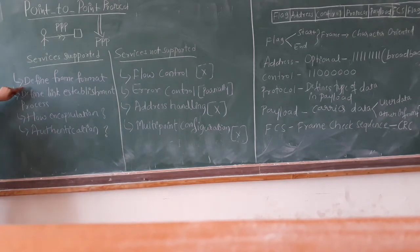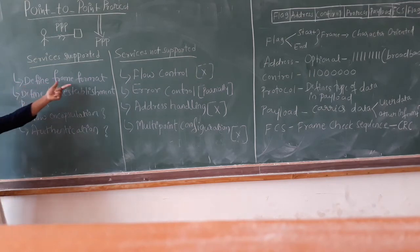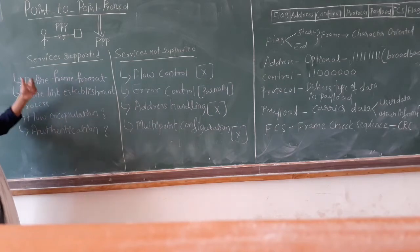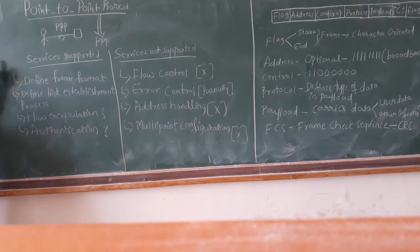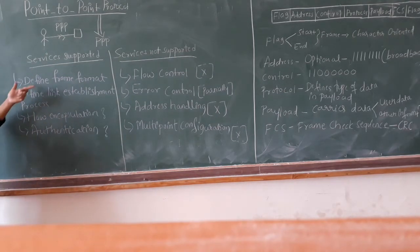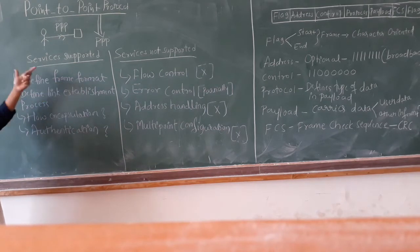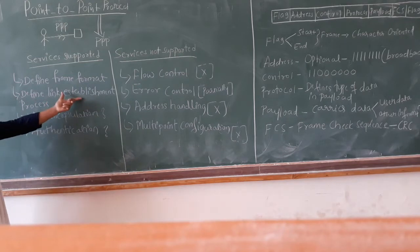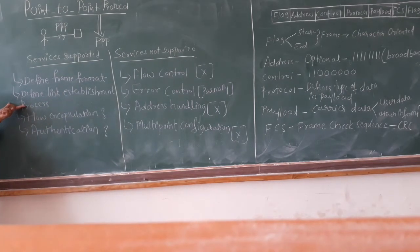The first service supported by point-to-point protocol is that it defines the frame format. This means the protocol is responsible to tell how the format of a frame should be. The protocol is also responsible to define the process of link establishment — whether the link should be connection-oriented or connectionless.